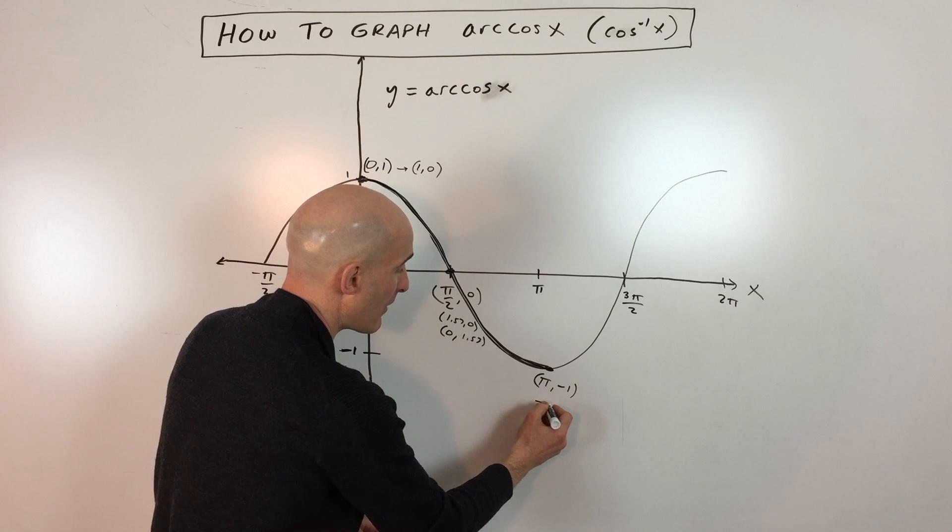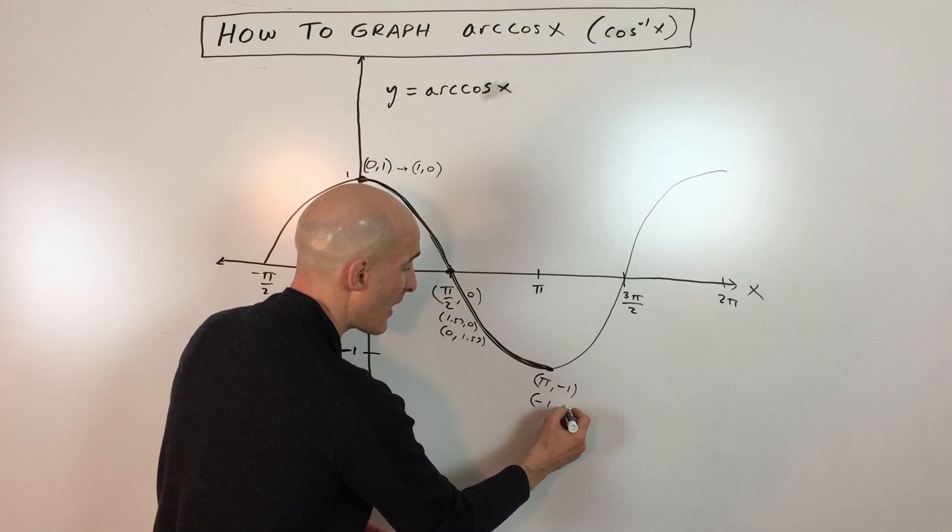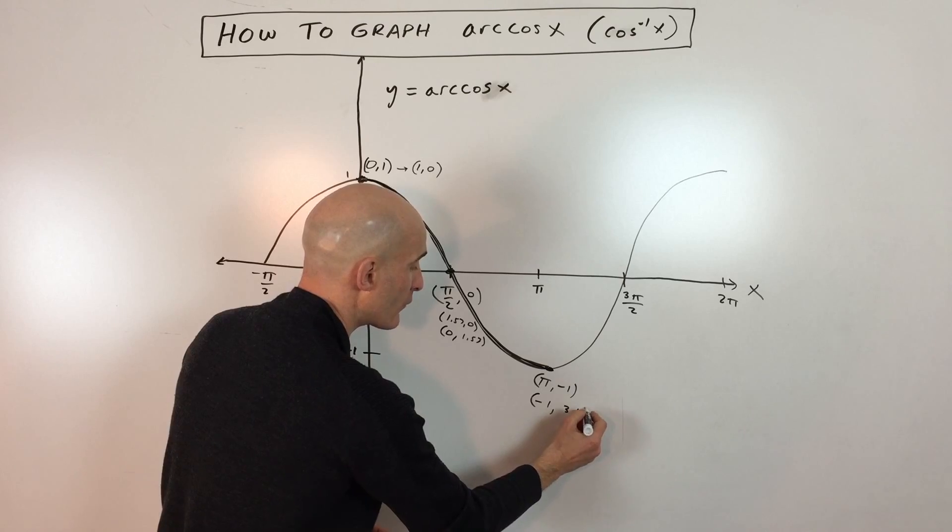And then over here, when we switch pi and negative one, we get negative one comma pi, or we'll just say negative one comma 3.14.